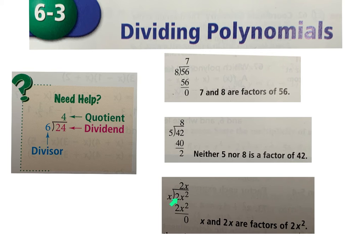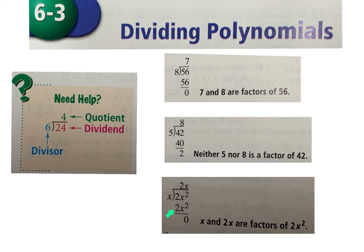You actually did this when we covered exponents. For 2x² divided by x, you ask: what do I need to multiply x by to get 2x²? You multiply x by 2x to get 2x², and 2x² minus 2x² is 0. This tells us that x and 2x are factors of 2x².